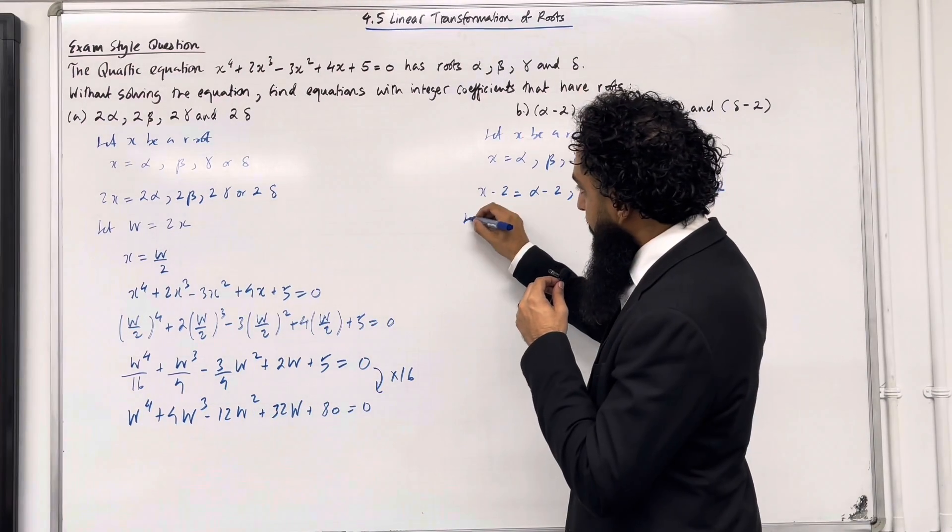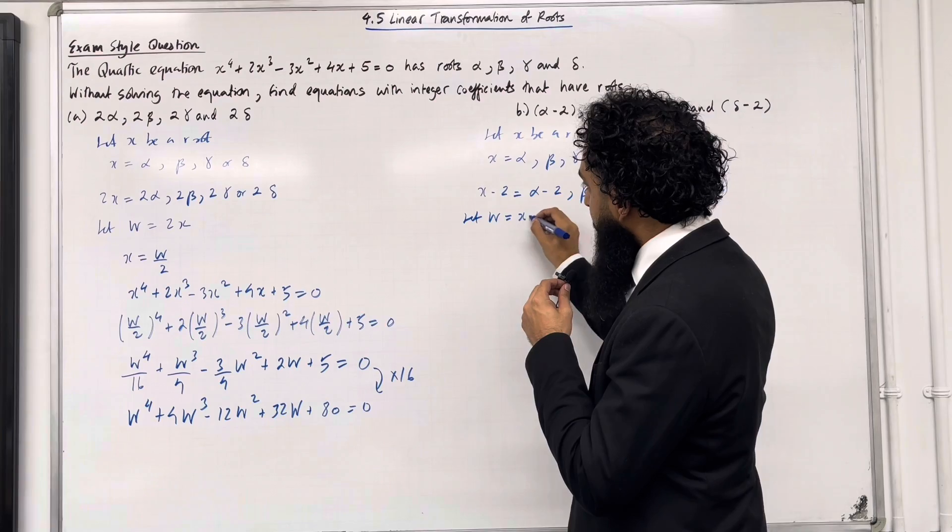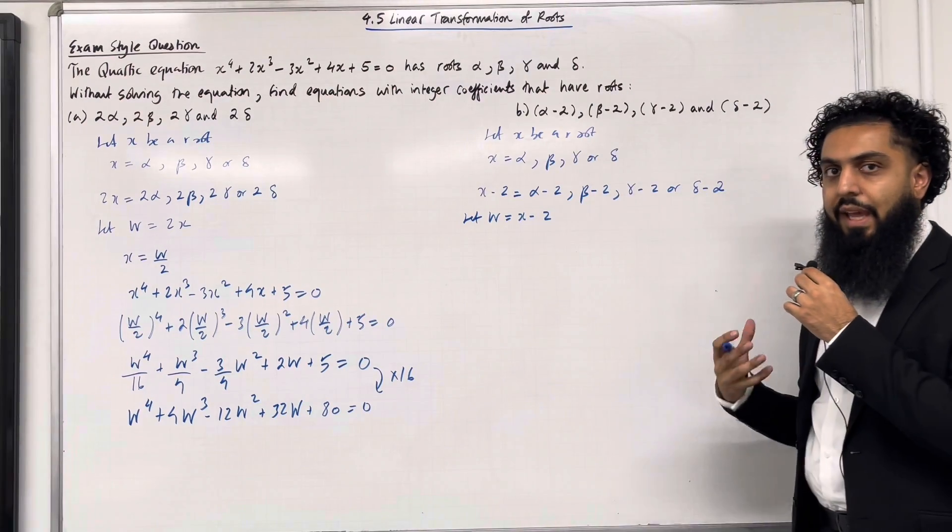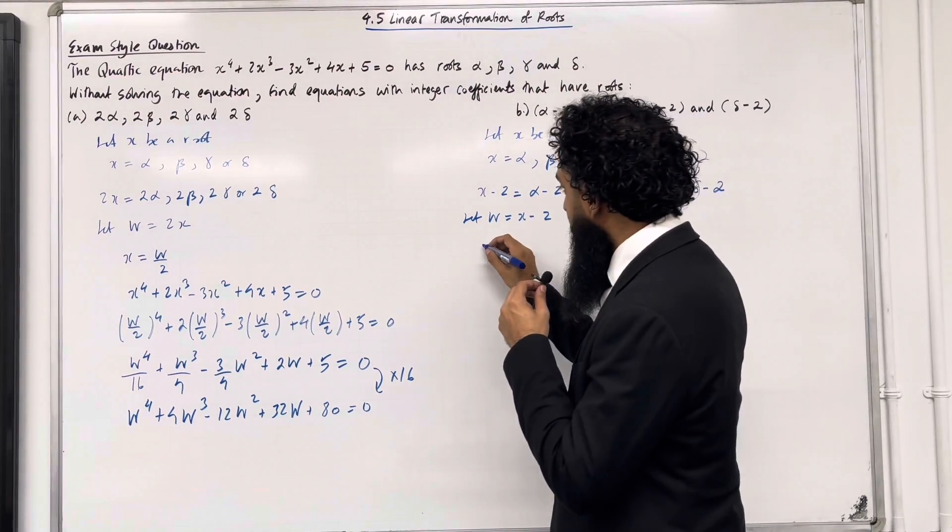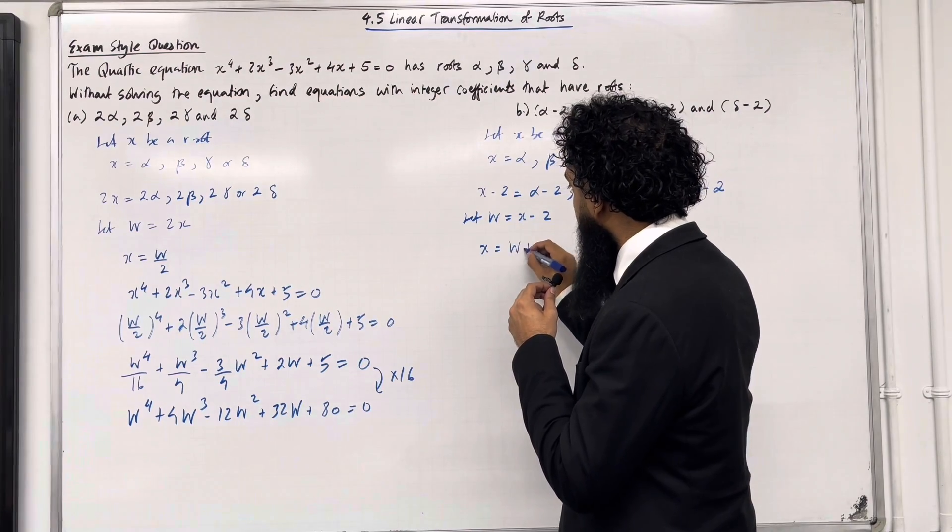Now let W equal x - 2. I'm going to make x the subject. So if I do this I get x is equal to W + 2.